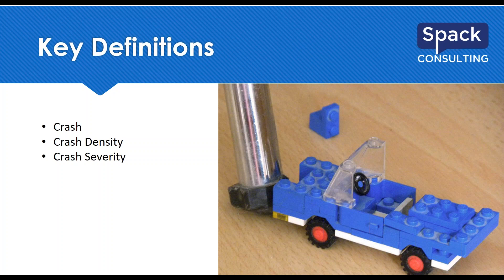And finally, a property damage crash is type PD or PDO. These are crashes where no person is injured — only injury to vehicles or public or private property. Those are the most common; most crashes don't result in injury, which we hope they don't. Usually the highest number at any location we're looking at will be these property damage only crashes.